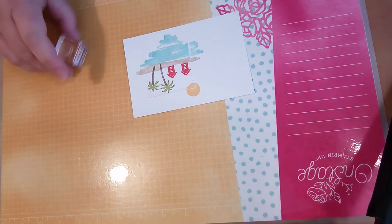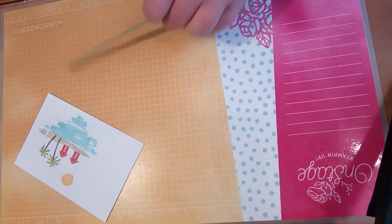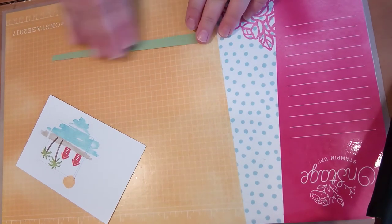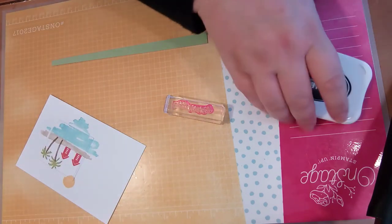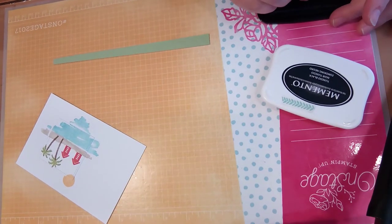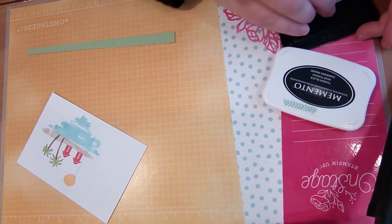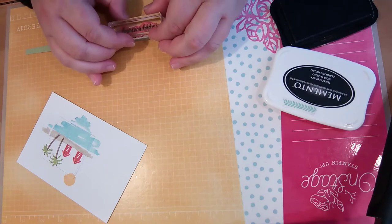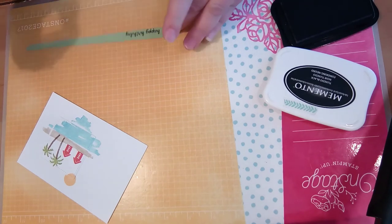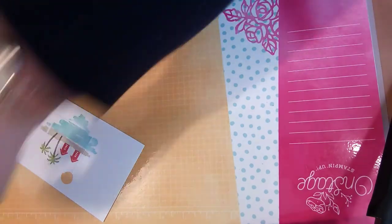Okay and the last bit of stamping we want to do is actually pop that aside. I've got a strip of, you can see this is just a scrap strip of Pear Pizzazz, and I've got my Memento Black with the sentiment. I actually got the Happy Birthday sentiment from the Timeless Tulips stamp set. And I want to do that near the bottom and I'm going to trim that tight to the words.